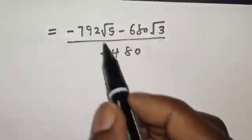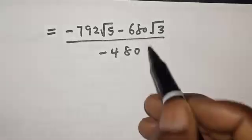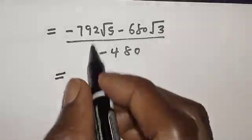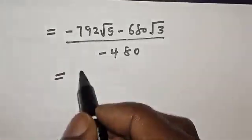This equals minus 792 root 5 minus 680 root 3 over minus 480. Then we can reduce the whole expression by dividing everything by 8.